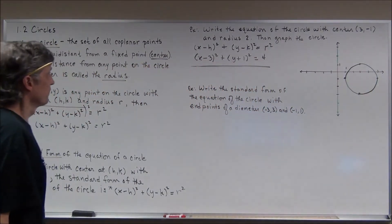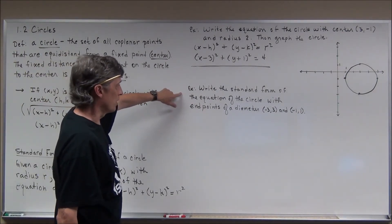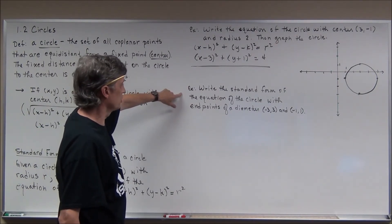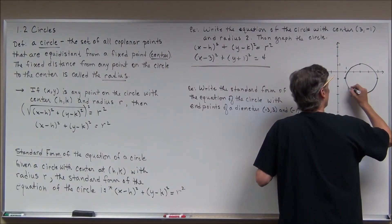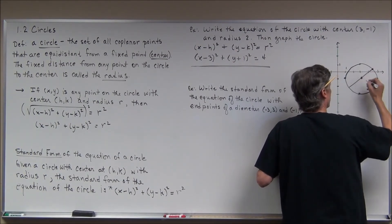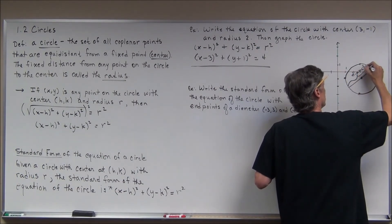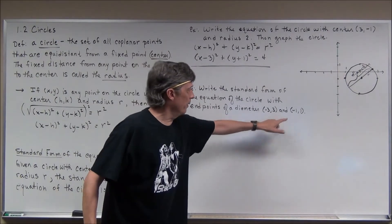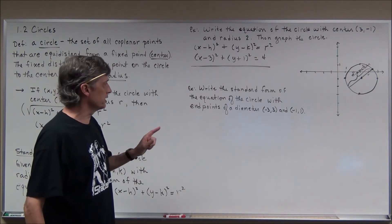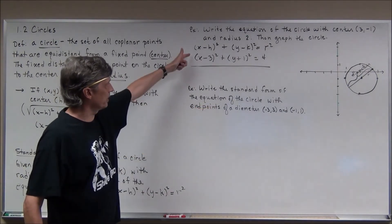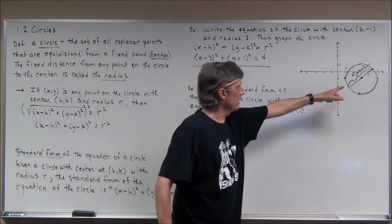Now there's a bit more algebra needed for the next example. It says: write the standard form, or center-radius form, of the equation of the circle with endpoints of a diameter. A diameter goes through the center from one end to the other — the whole thing is the diameter, and half of it is the radius. They give me the endpoints of the diameter, so I'll have to do some work since I don't have the center or radius given directly, but I have enough information to find both.